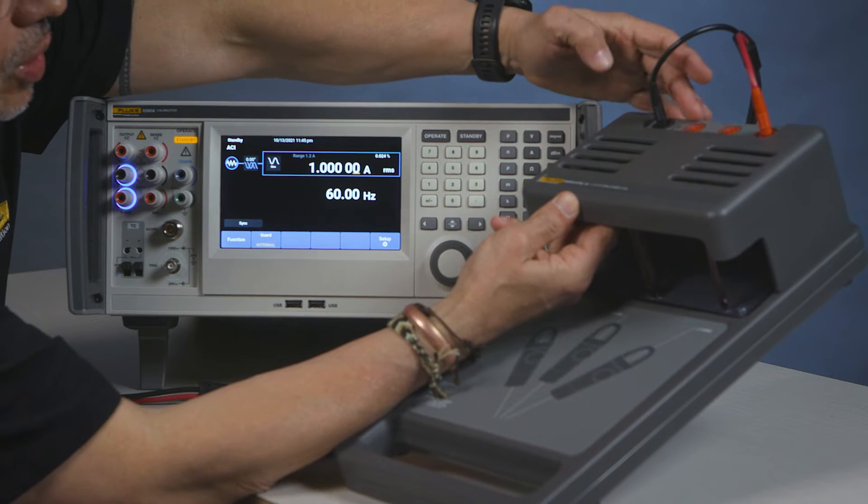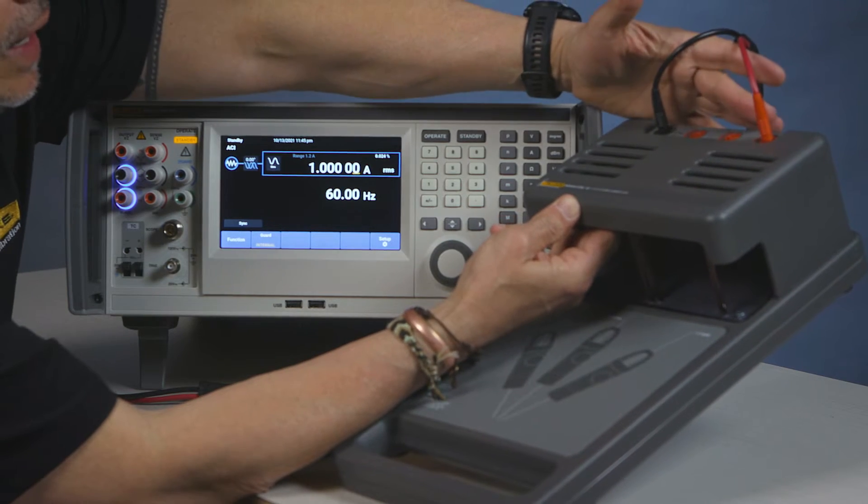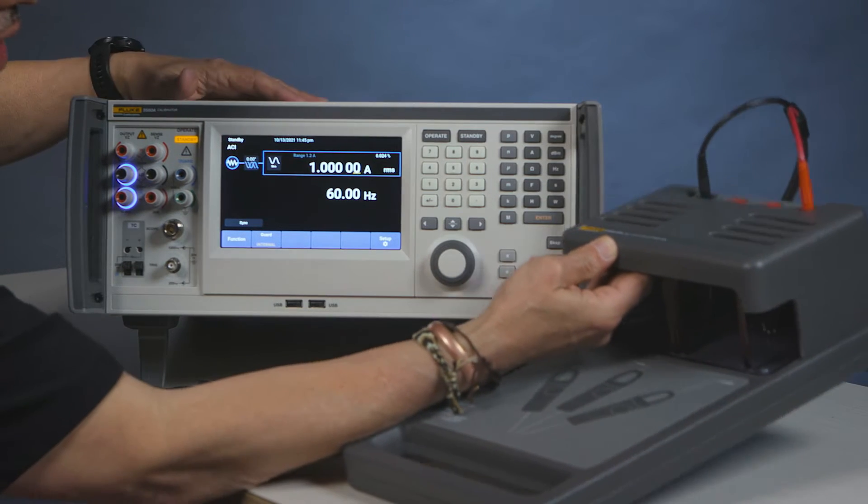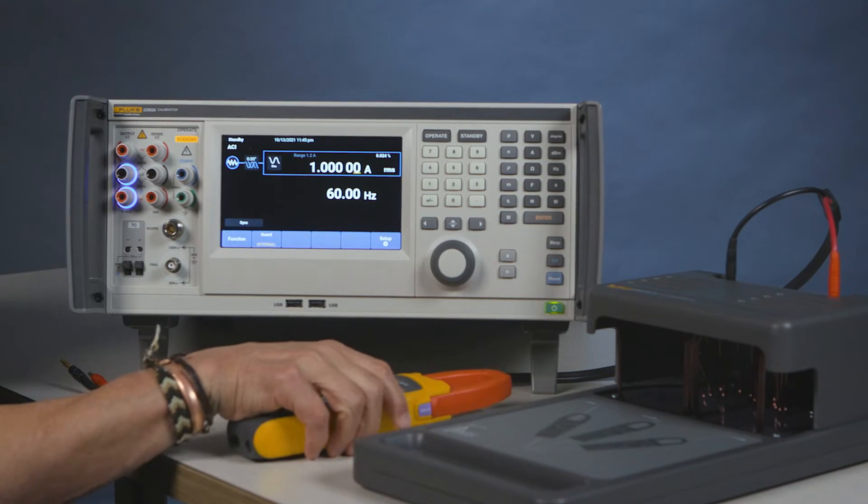Our new coil is designed with a one-turn, two-turn, and a 10-turn, utilized for calibration of clamp meters.